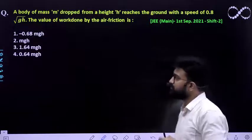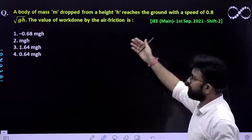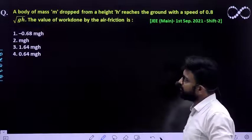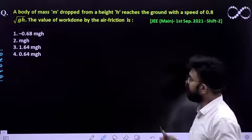So let us see this question first. The question says a body of mass m dropped from a height h reaches the ground with a speed of 0.8 root gh. The value of the work done by the air friction is...